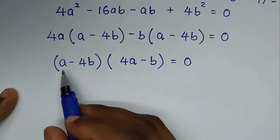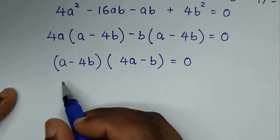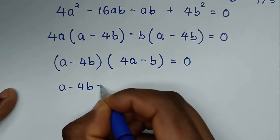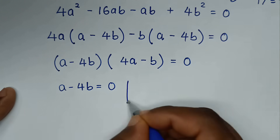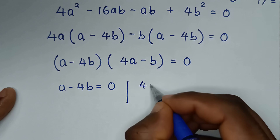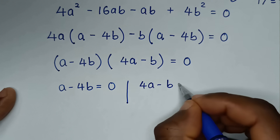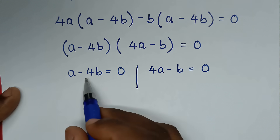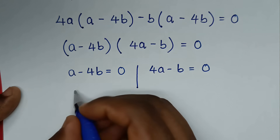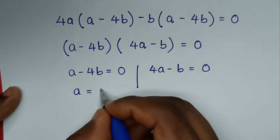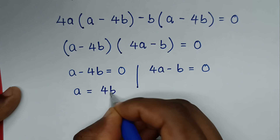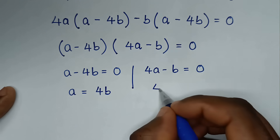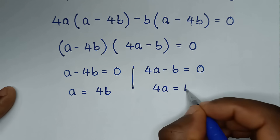We now have two cases. Case 1: a - 4b = 0, so a = 4b. Case 2: 4a - b = 0, so b = 4a.